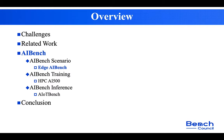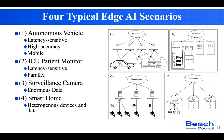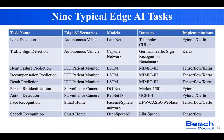Edge AI Bench provides edge scenario benchmarks. It mainly includes four typical edge AI scenarios: autonomous vehicle, ICU patient monitoring, surveillance camera, and smart home. These scenarios have different characteristics — for example, autonomous vehicle is very latency-sensitive with high accuracy requirements. In total, we provide non-typical edge AI tasks like lane detection, heart failure prediction, death prediction, and others, along with corresponding models, datasets, and implementations.